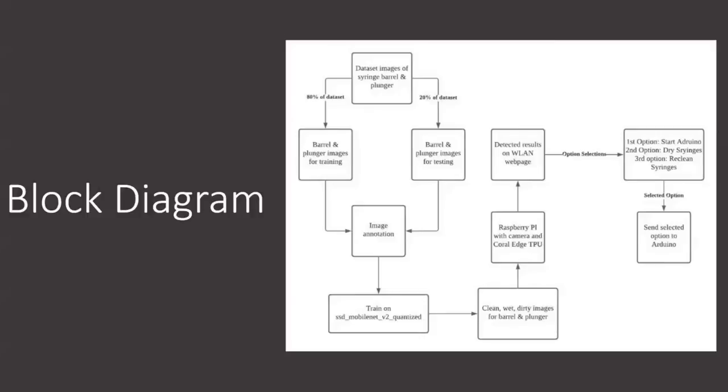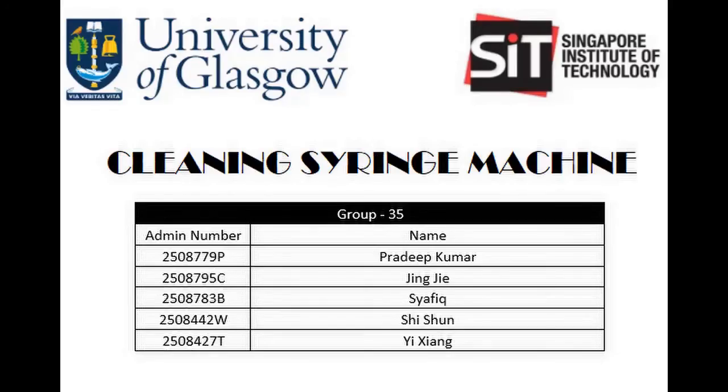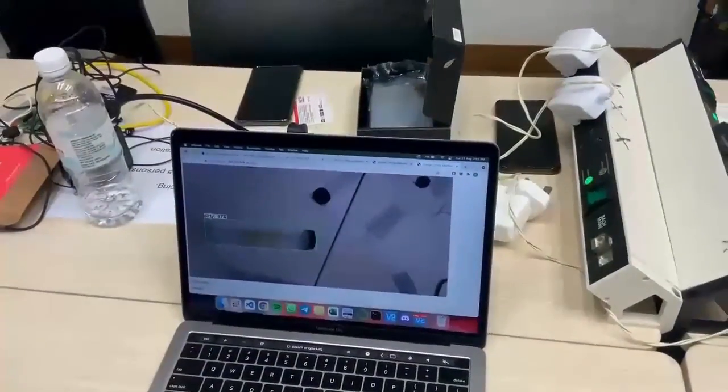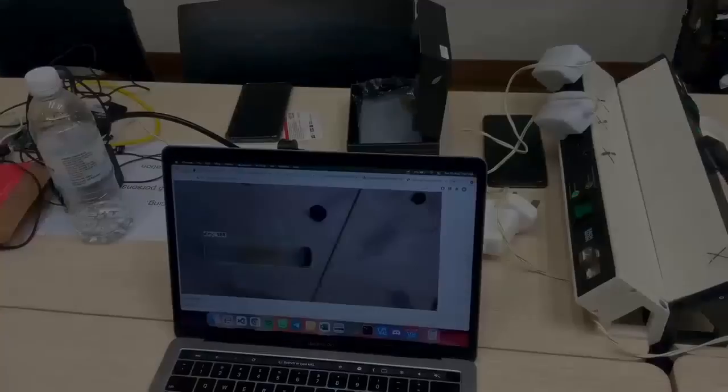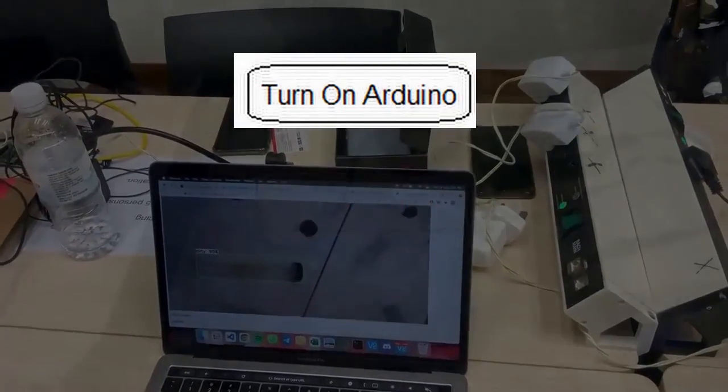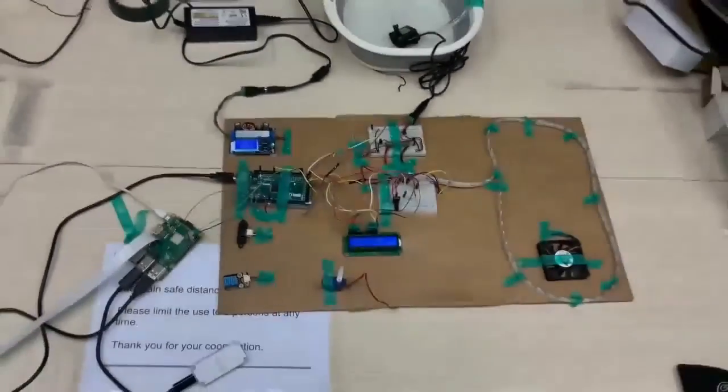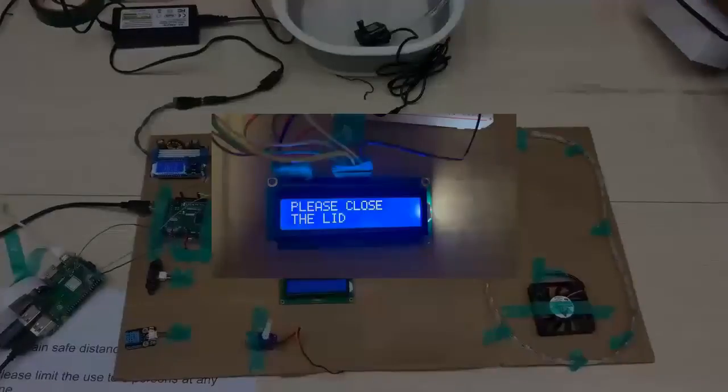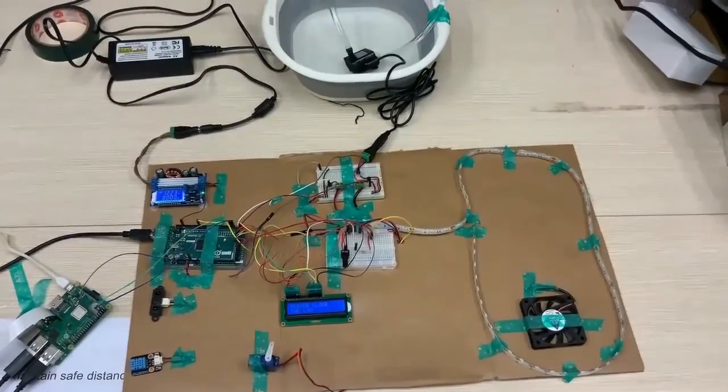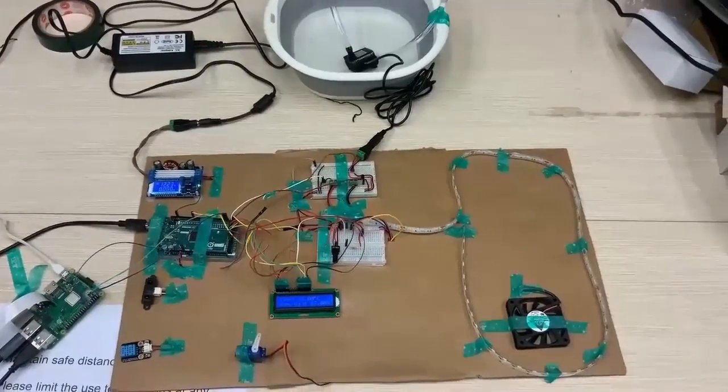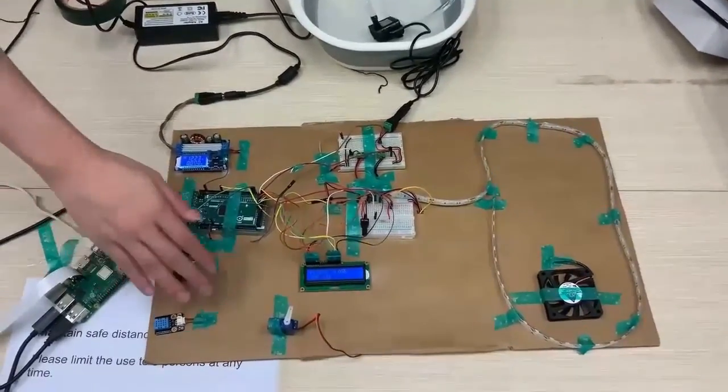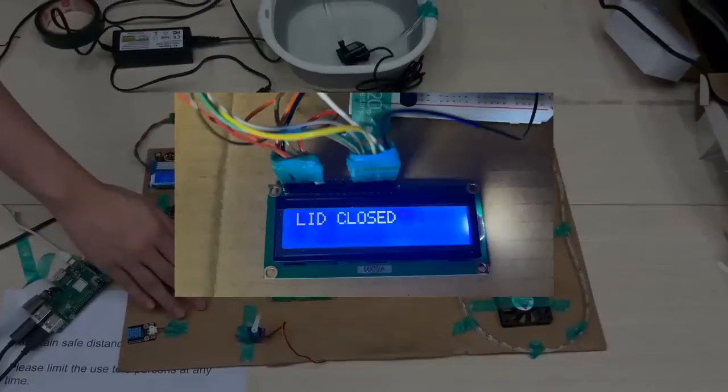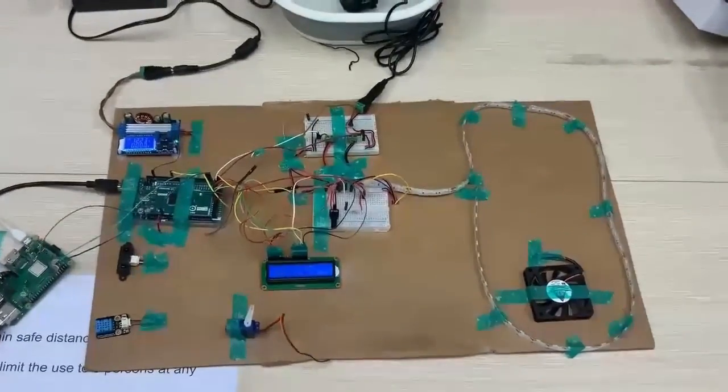This concludes our presentation. We will now move on to how our product works. This is the user interface. In the user interface, the nurses will have three options to pick from. The main one being to start the device. When the device is turned on, there will be a message then to close the lid. This is to ensure the device is closed before the machine is turned on. When the lid is closed, which will be picked up by the infrared sensor, there will be a lid closed message sent. Afterwards, the process will begin.